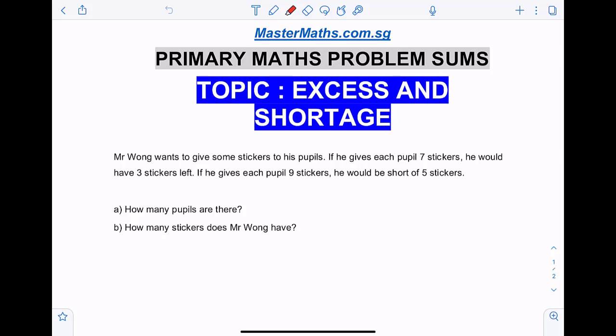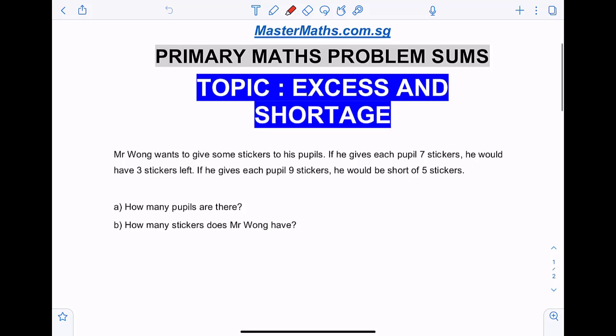Mr. Wong wants to give some stickers to his pupils. If he gives each pupil seven stickers, he would have three stickers left. If he gives each pupil nine stickers, he would be short of five stickers. How many pupils are there? How many stickers does Mr. Wong have?